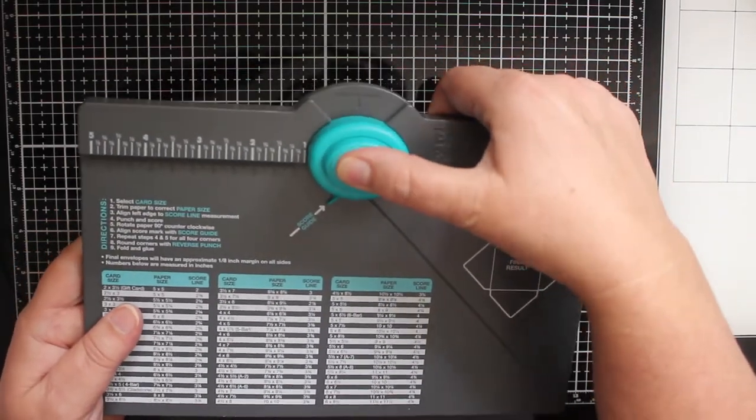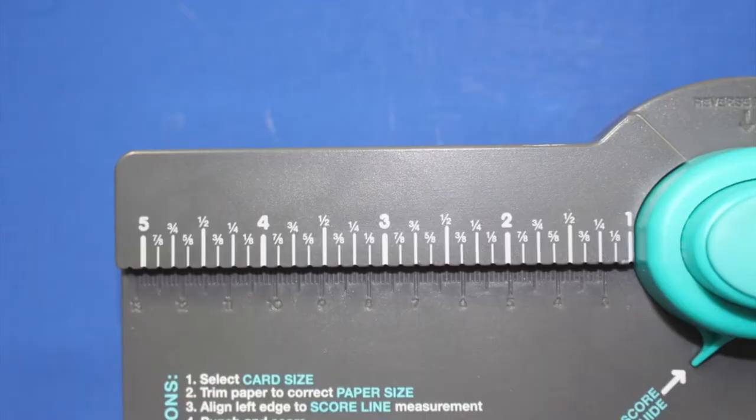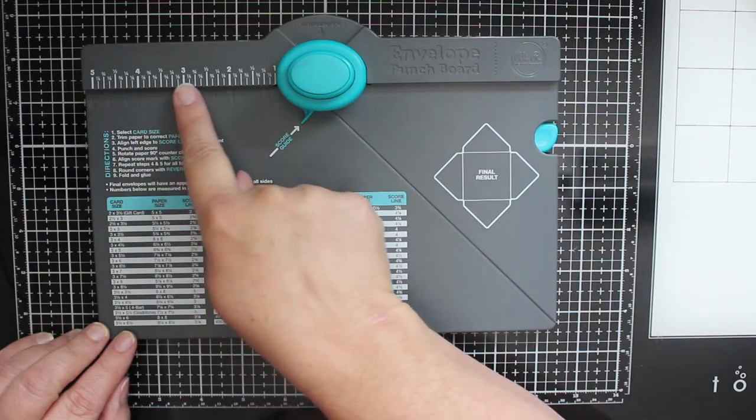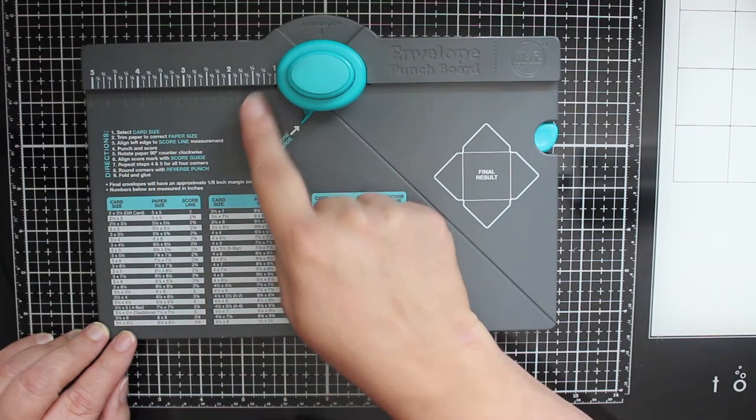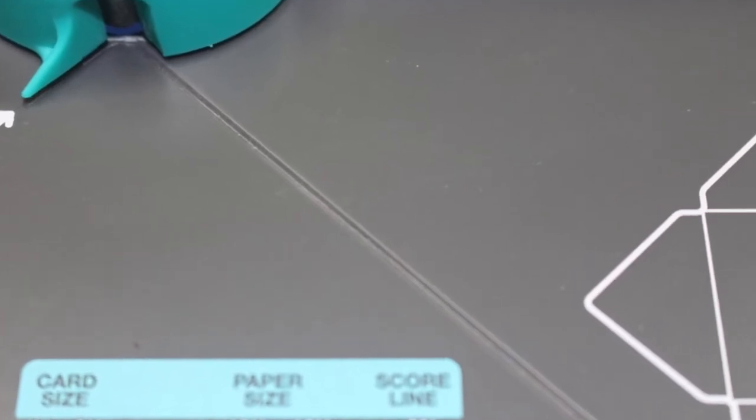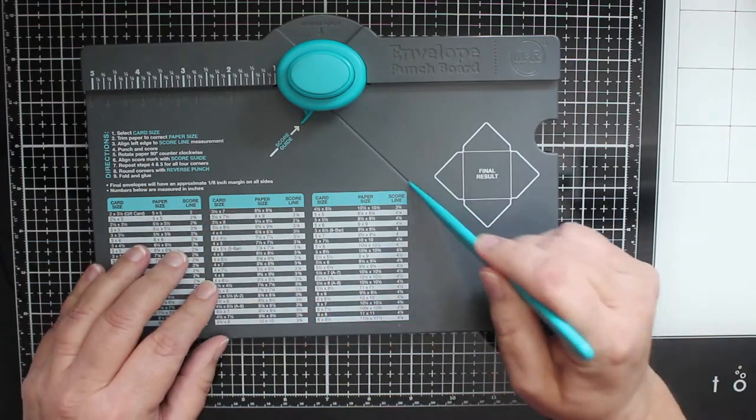It has a built-in punch at the top that serves two functions. We'll check those both out in just a little while. There's a ruler at the top of the board to show you exactly where to place your paper depending on the size of envelope you're making. There's a groove on the front of the board that works with a bone folder. The bone folder slides easily in and out of a slot in the back.